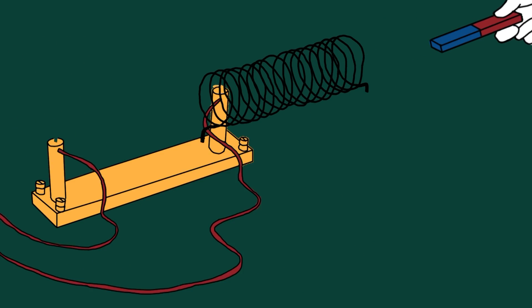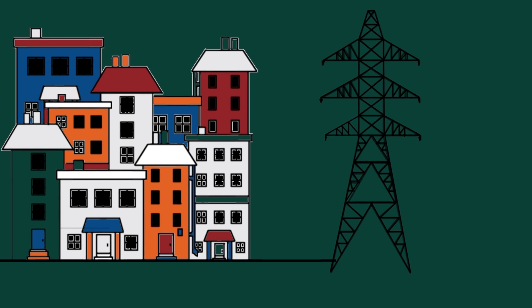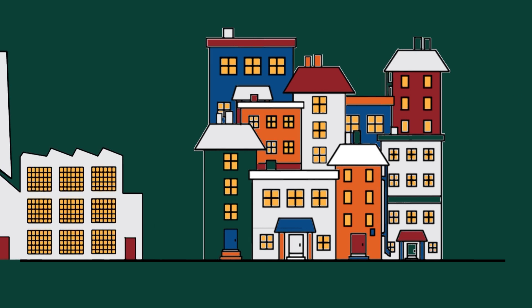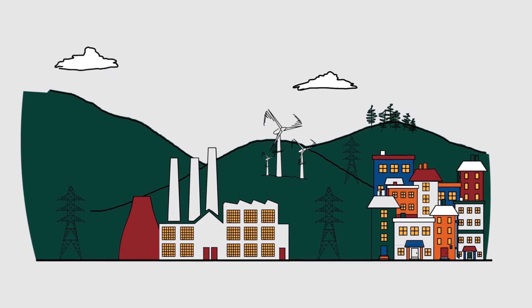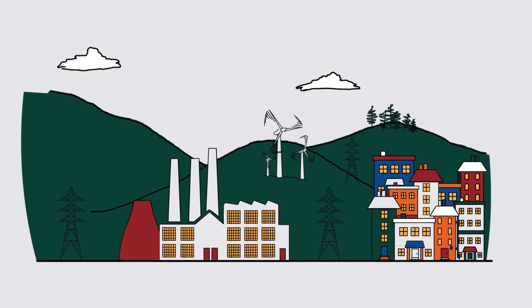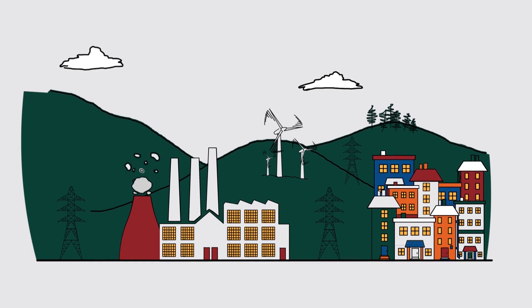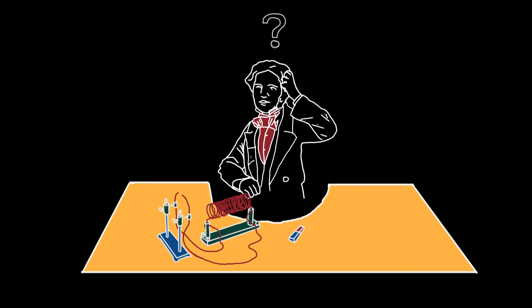This is how we make electricity today, whether the motion comes from burning fossil fuels, nuclear or renewable sources. But as impressive as this achievement is, do you understand what's going on? Did Faraday understand how electricity and magnetism were linked?